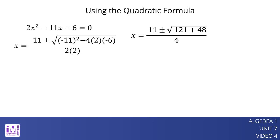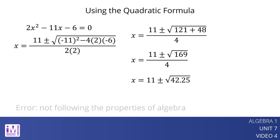Here is another example. What is the error? Another common error is making calculation errors, or not following the properties of algebra. Both parts of the numerator, the 11 and the square root of 169, get divided by 4. Also, the square root of 169 divided by 4 is not the square root of 42.25.